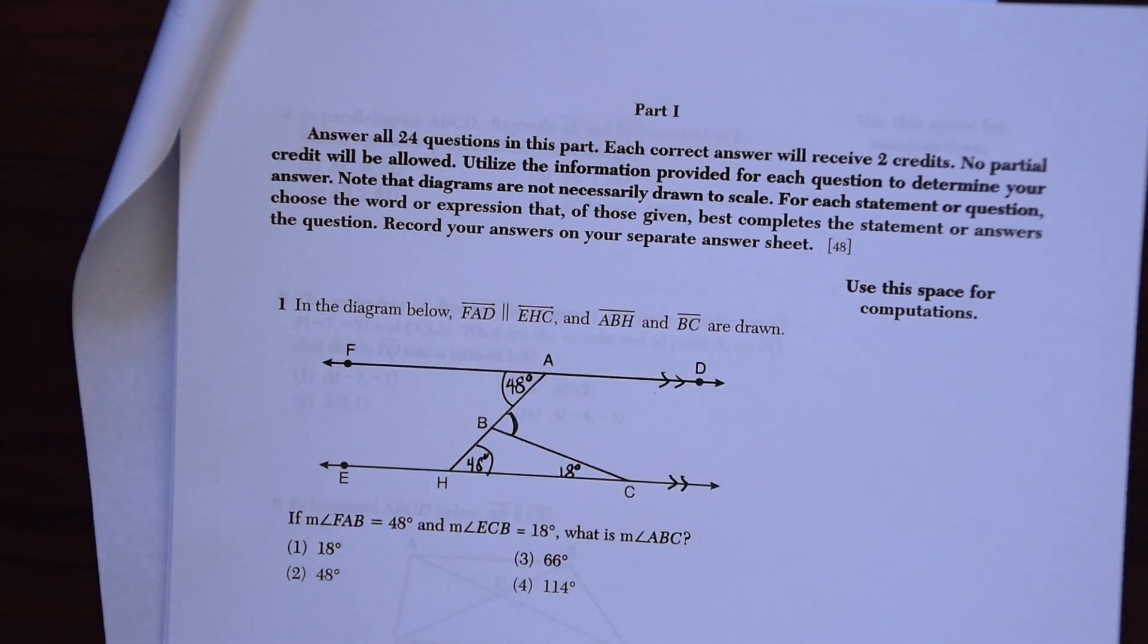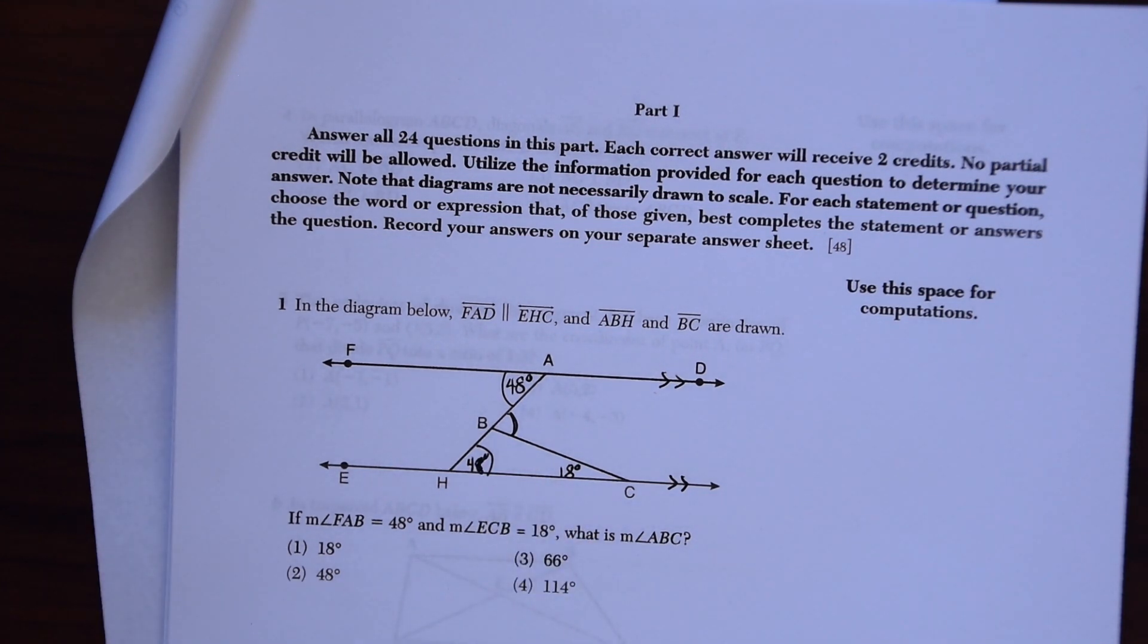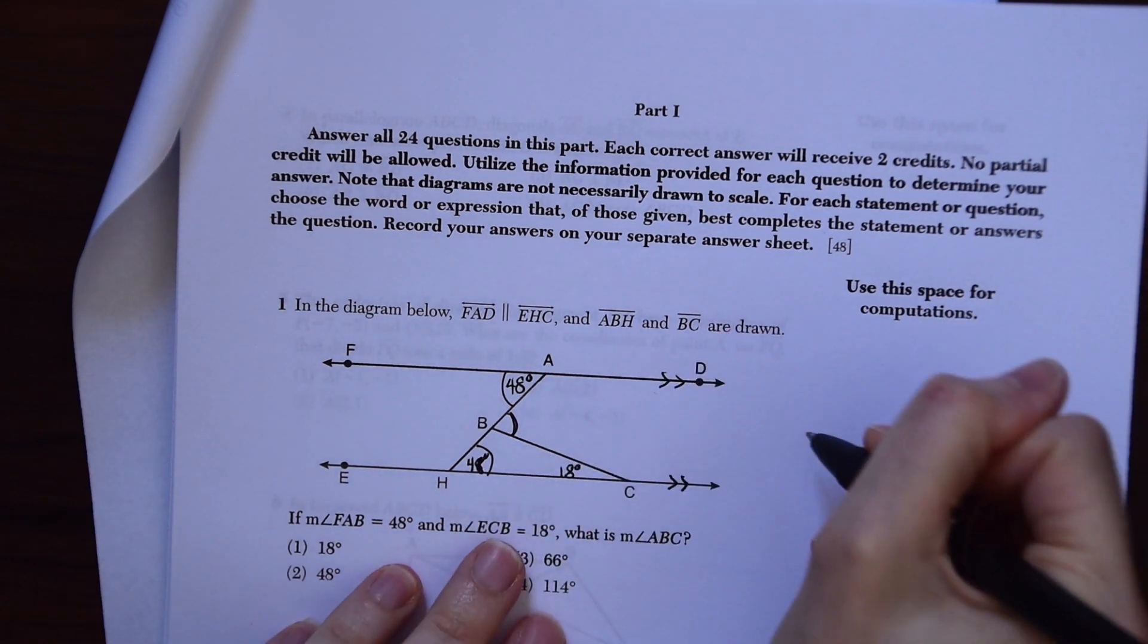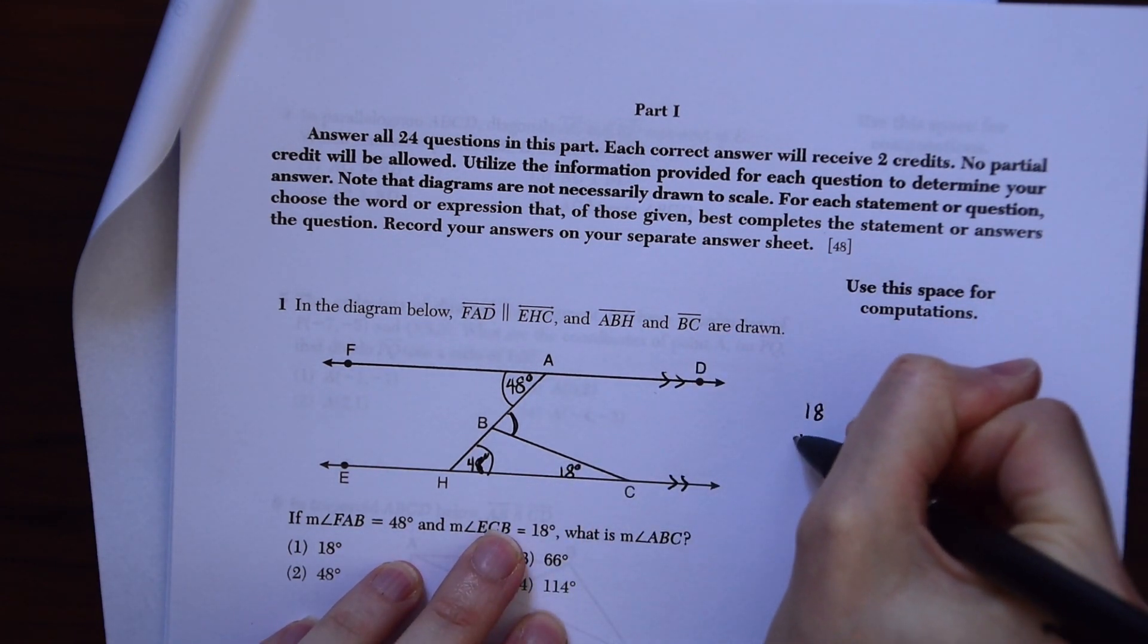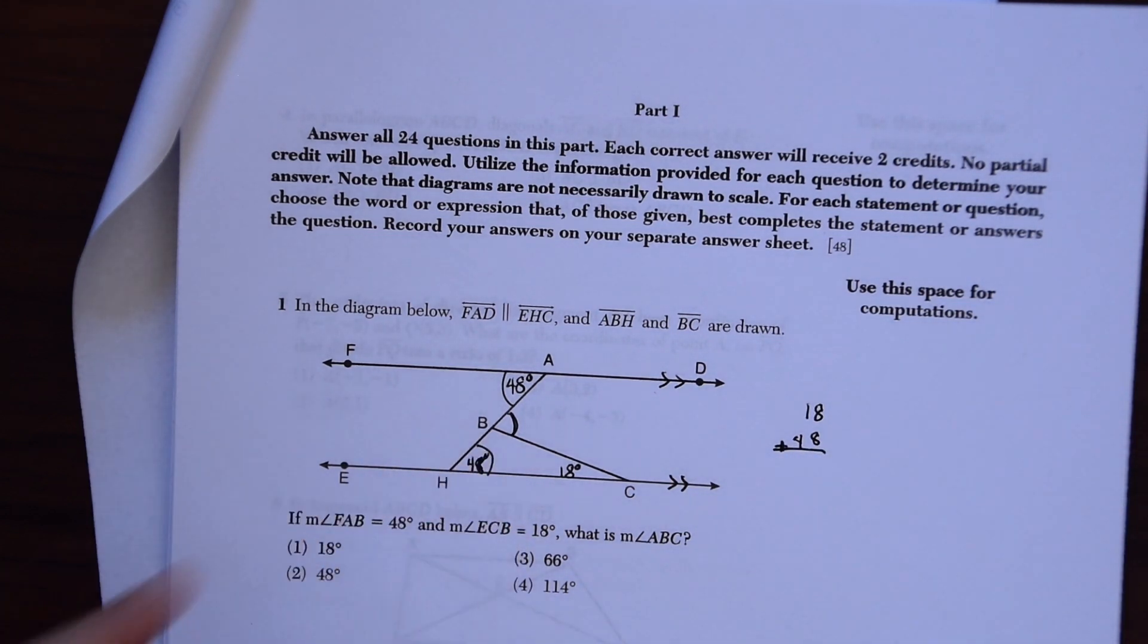And if you forgot those transversal rules, don't worry, I have a video on this and I can put it in the description. So 48 degrees, 18. We know that a triangle has 180 degrees. So if we have 18 degrees and 48 degrees, we're going to be able to find this other angle right here, this angle HBC.